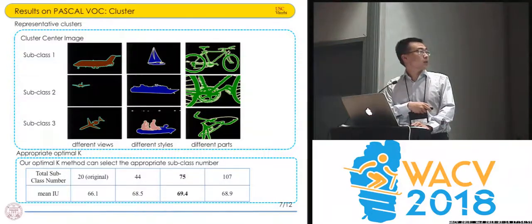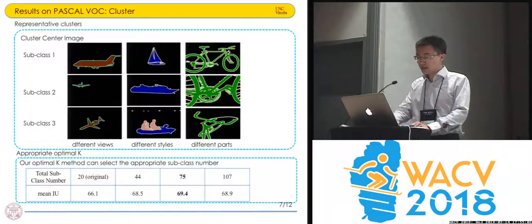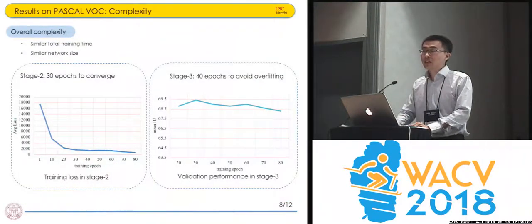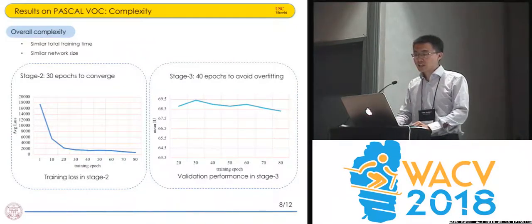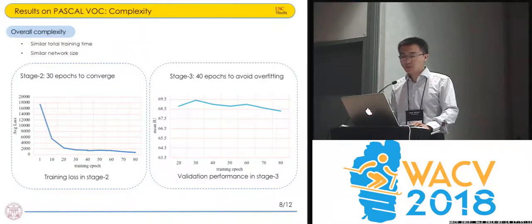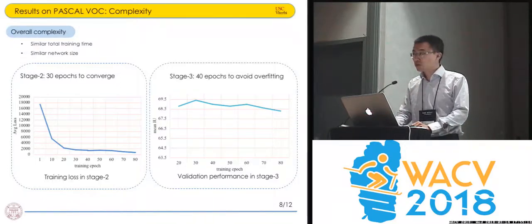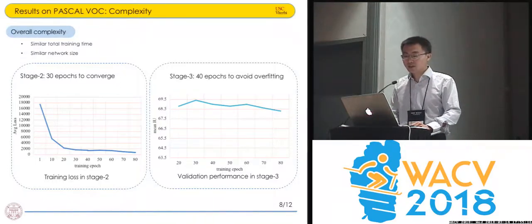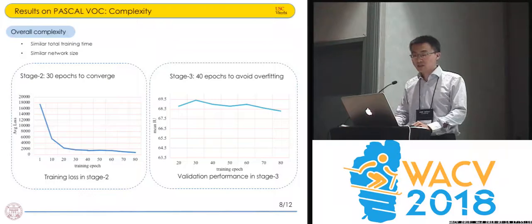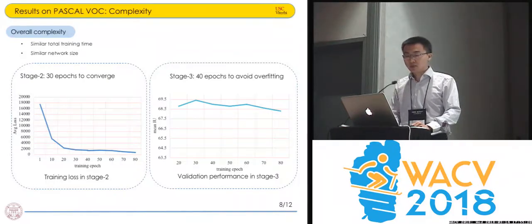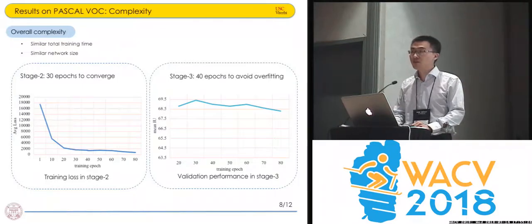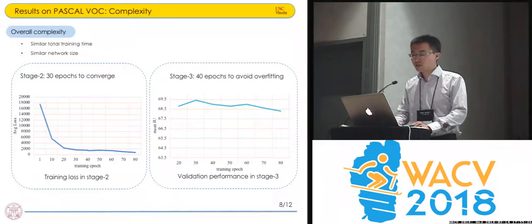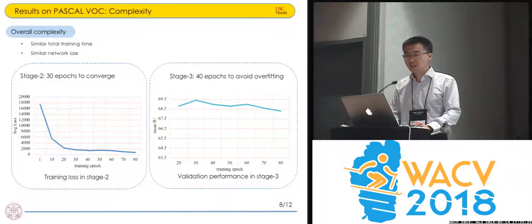There is a 3% improvement compared with the baseline approach, and we use three training stages. We analyze the complexity of our approach — there is similar total training time and similar network size compared with the baseline. For stage two, we use 30 epochs to converge, and for stage three, we use 40 epochs to avoid overfitting.